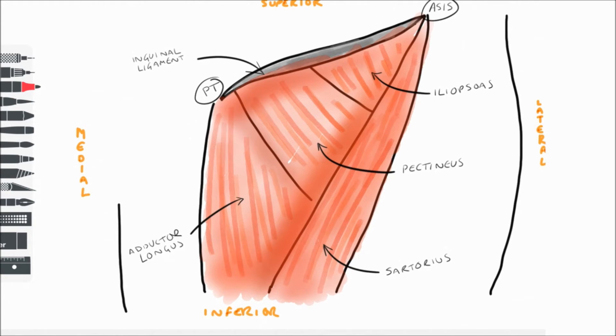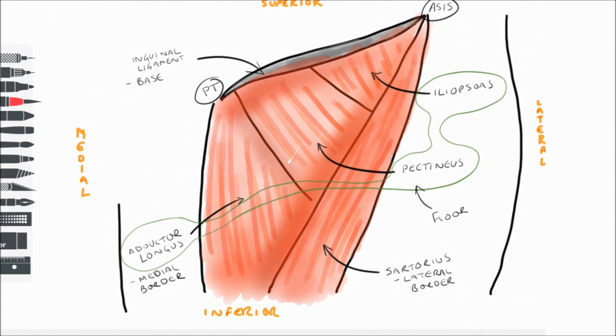So the inguinal ligament across the top forms the base of the femoral triangle, with sartorius forming the lateral border and adductor longus forming the medial border. The combination of adductor longus, pectineus, and iliopsoas forms the floor of the femoral triangle.